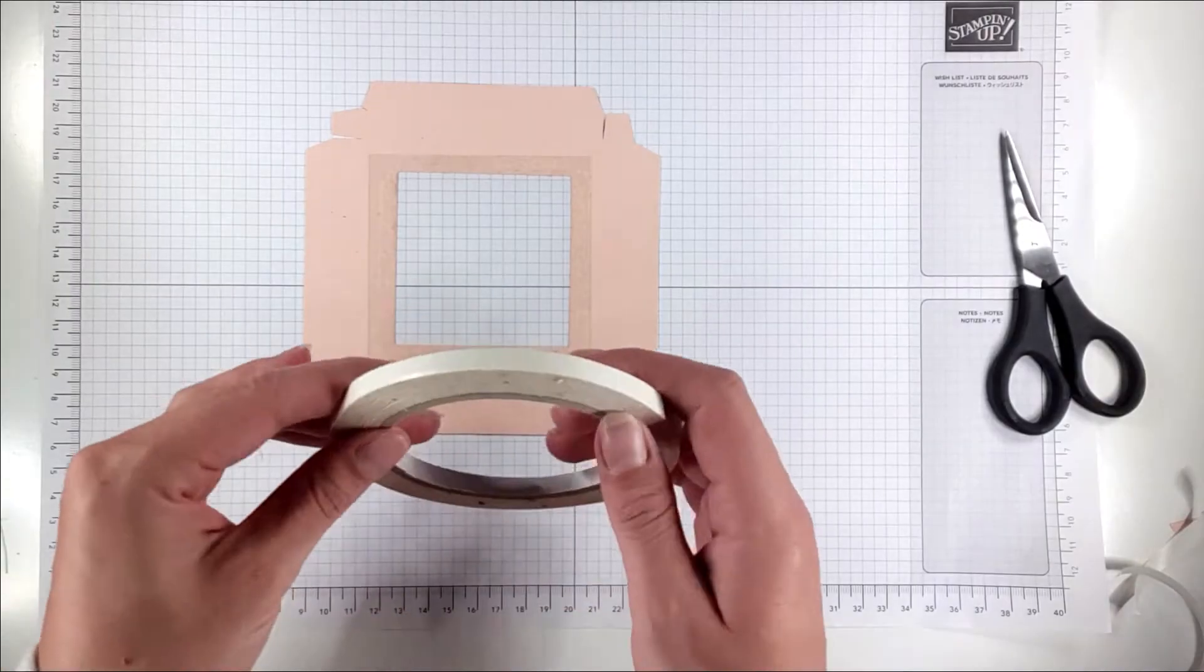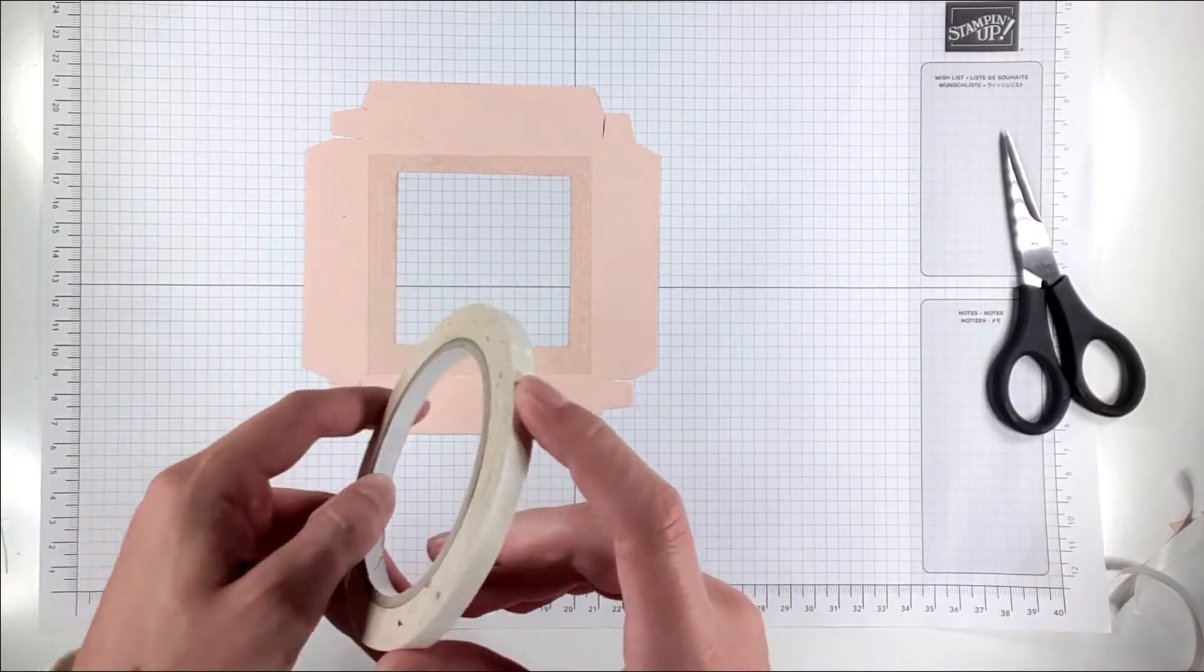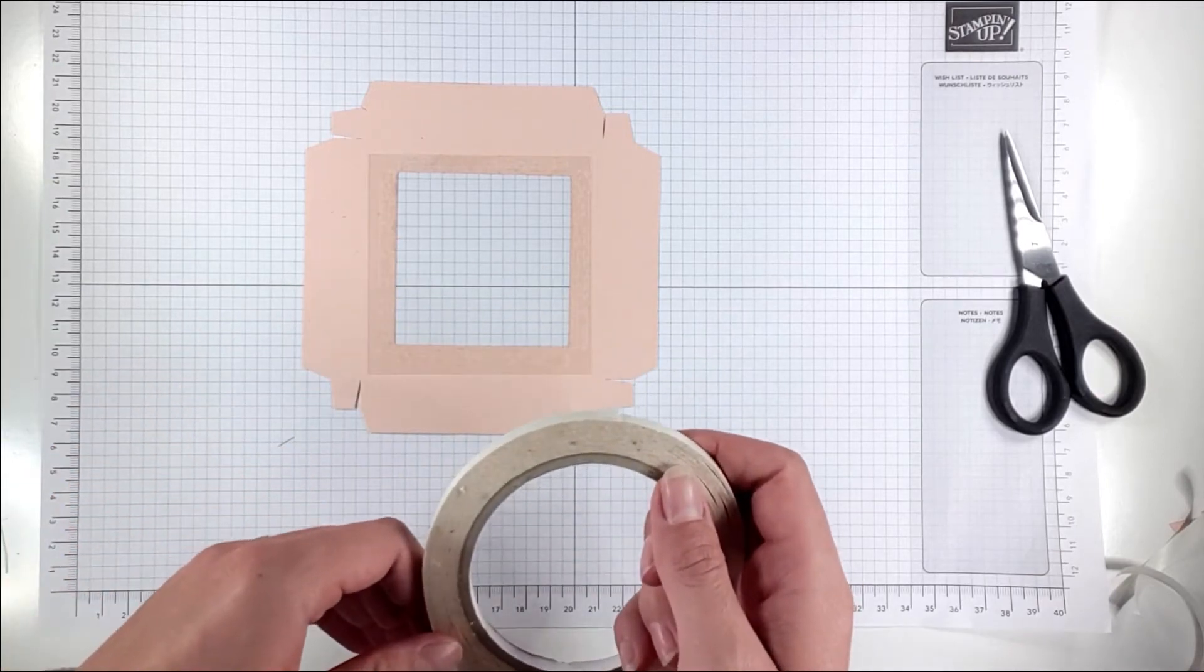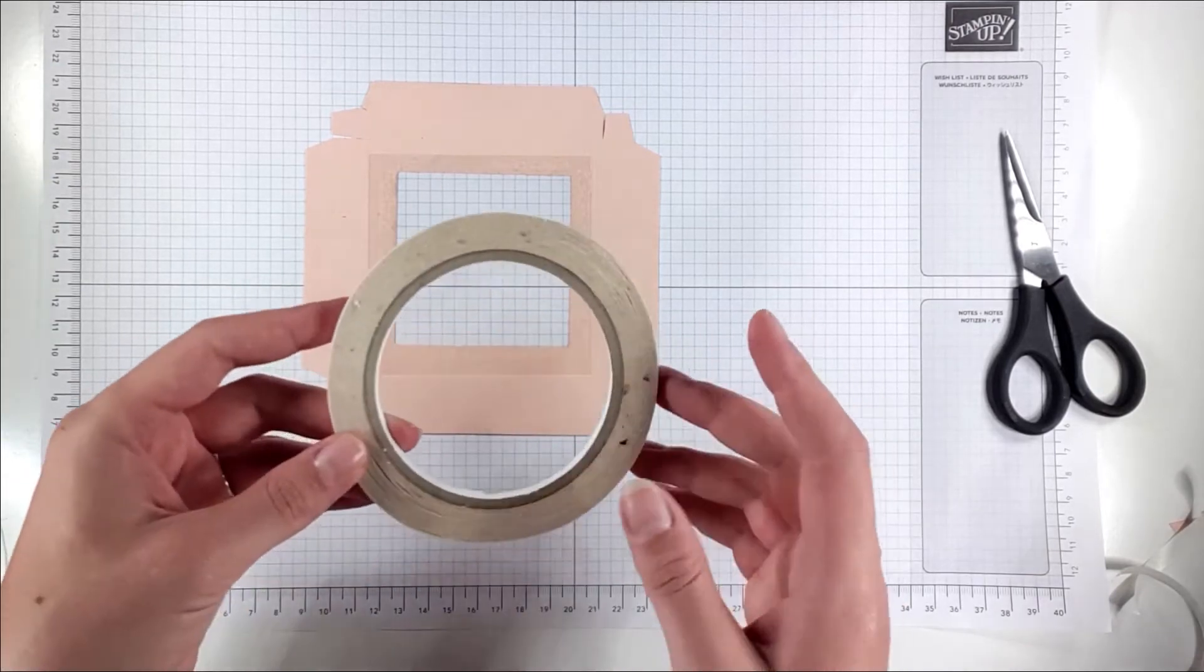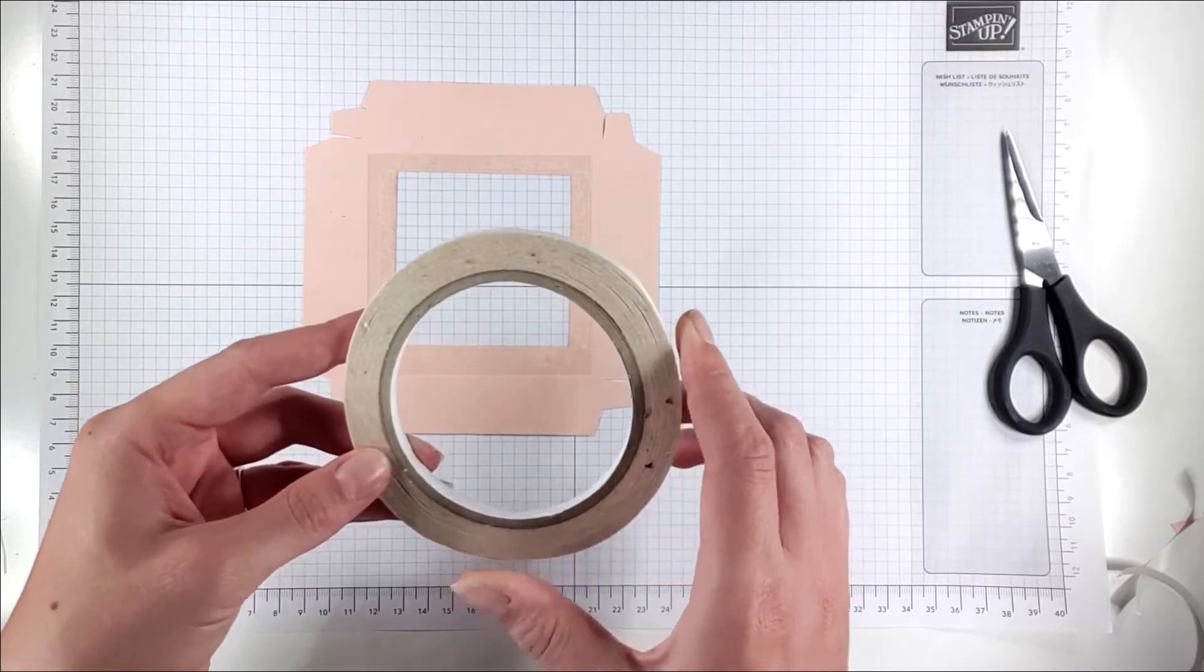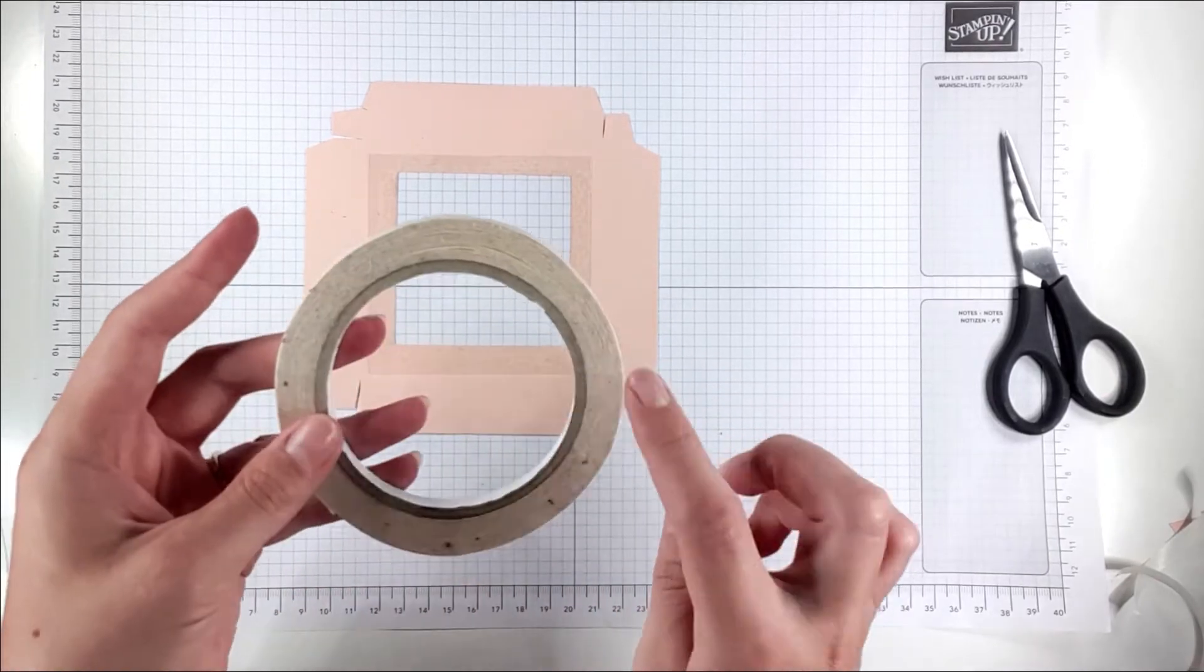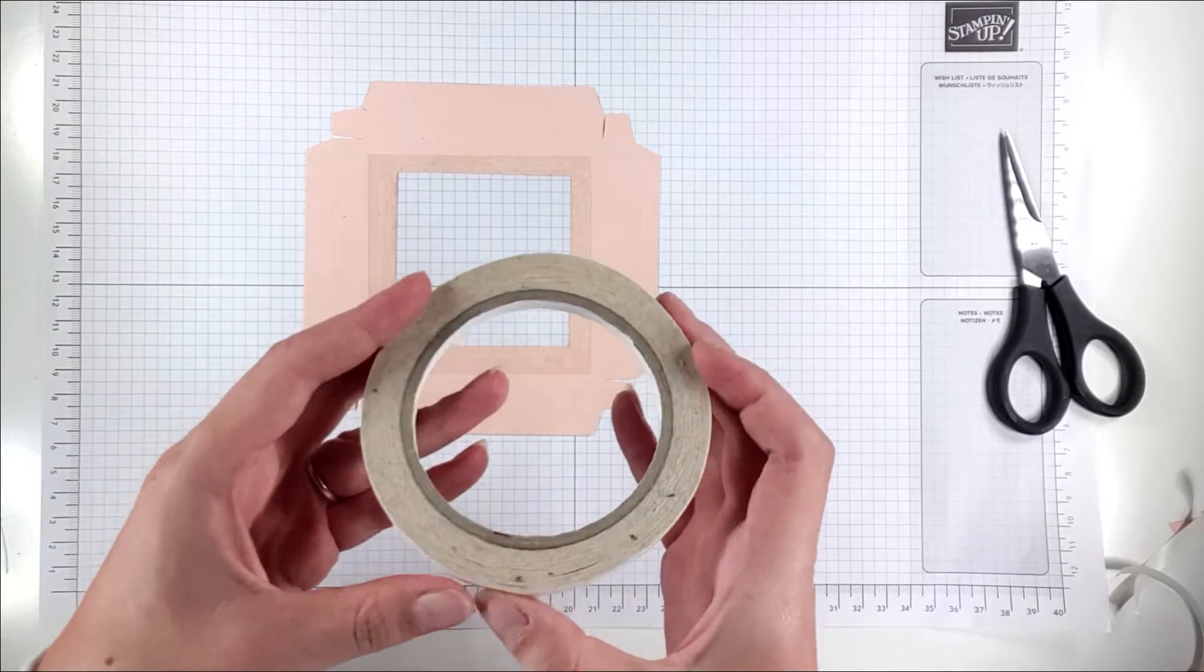Just while we're on the tear and tape, I really like the Stampin' Up one because it's really super sticky. It's £6.50 in the UK so you can get cheaper ones, but there's 25 meters on this so it lasts you.